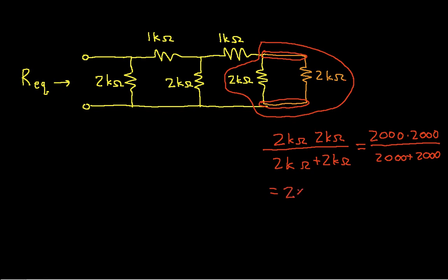But you can write this as 2,000 times 2,000 over 2,000 plus 2,000. A better way to write this would be 2 times 10 to the third, times 2 times 10 to the third, divided by 2 times 10 to the third, plus 2 times 10 to the third.